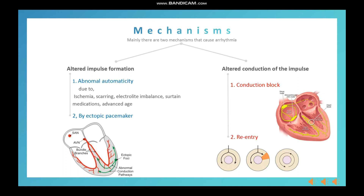Now let's go to altered conduction of the impulse. Altered conduction always occurs because of some blockage. The first type is conduction block — this happens when there is a permanent block in the conduction system, which may be between the SA node and AV node, in the His bundle, or in a bundle branch. In the diagram, there is a conduction block in the left bundle branch, and we call that left bundle branch block.